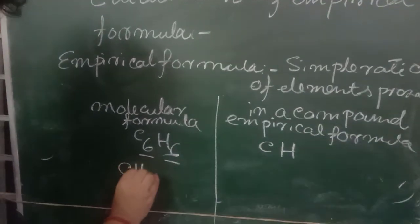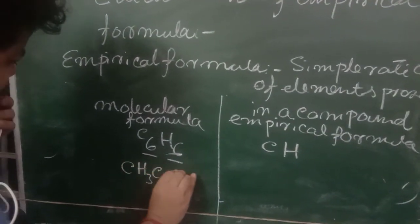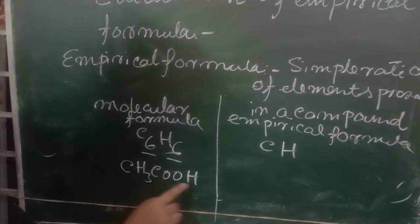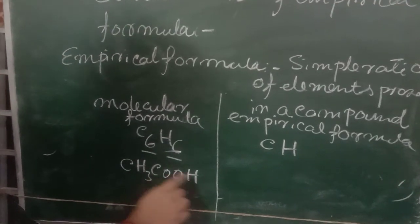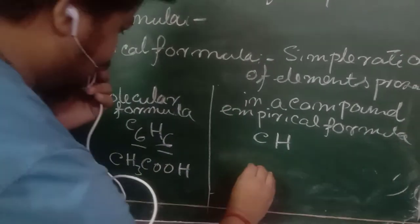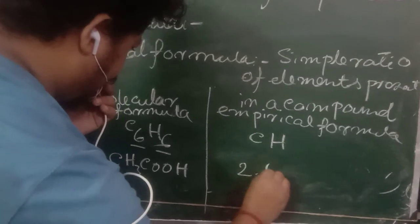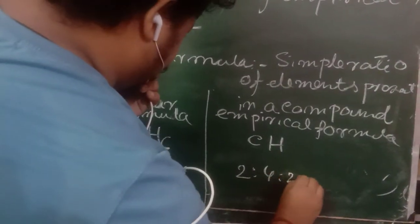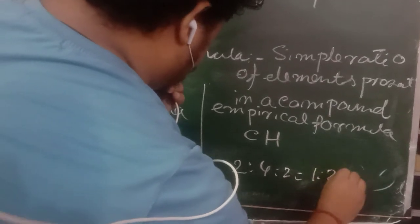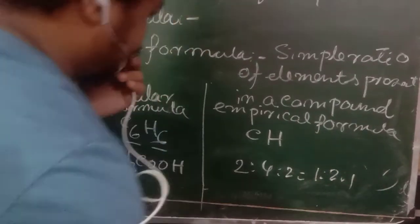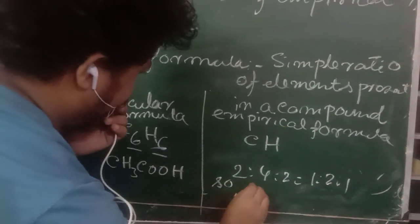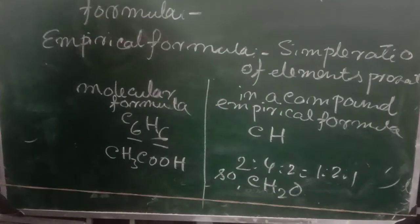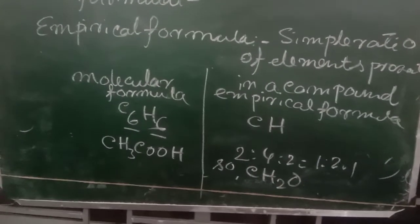If the molecular formula is C₂H₄O₂ — two carbon, four hydrogen, and two oxygen — the simple ratio gives 1 is to 2 is to 1, so the empirical formula is CH₂O. Thank you.